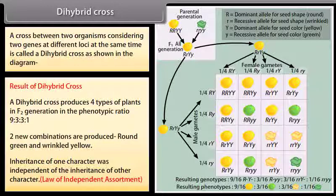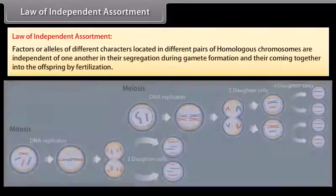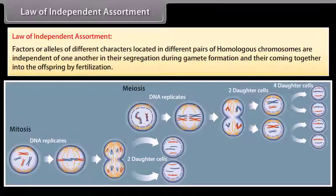Law of independent assortment. Factors or alleles of different characters located in different pairs of homologous chromosomes are independent of one another in their segregation during gamete formation and they are coming together into the offspring by fertilization.